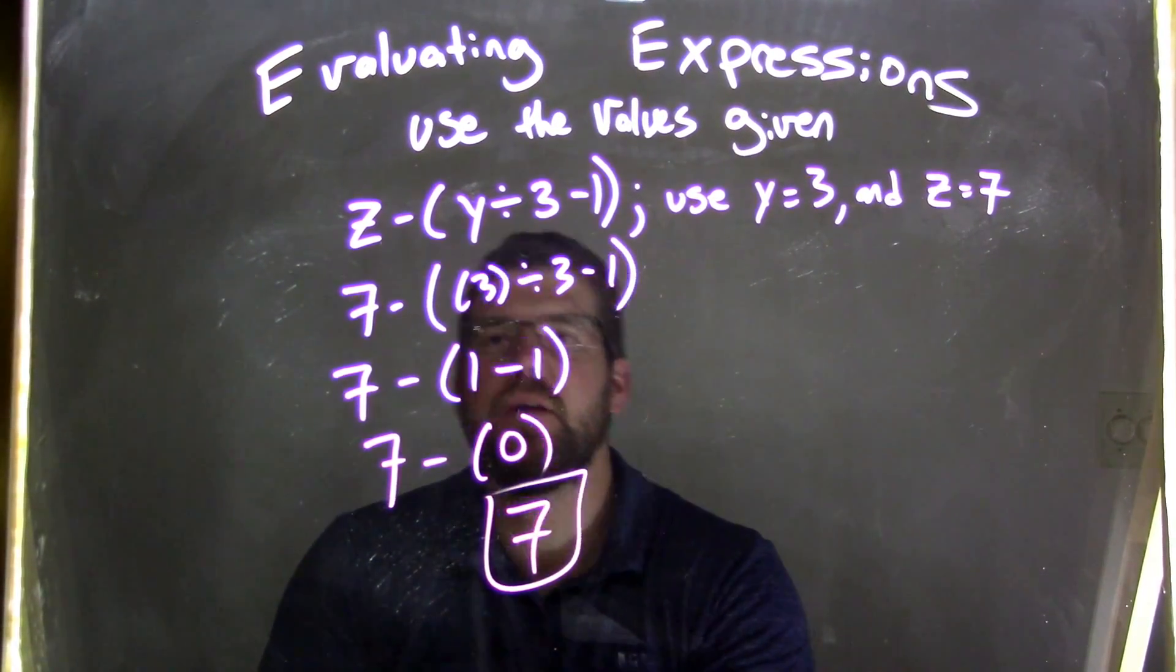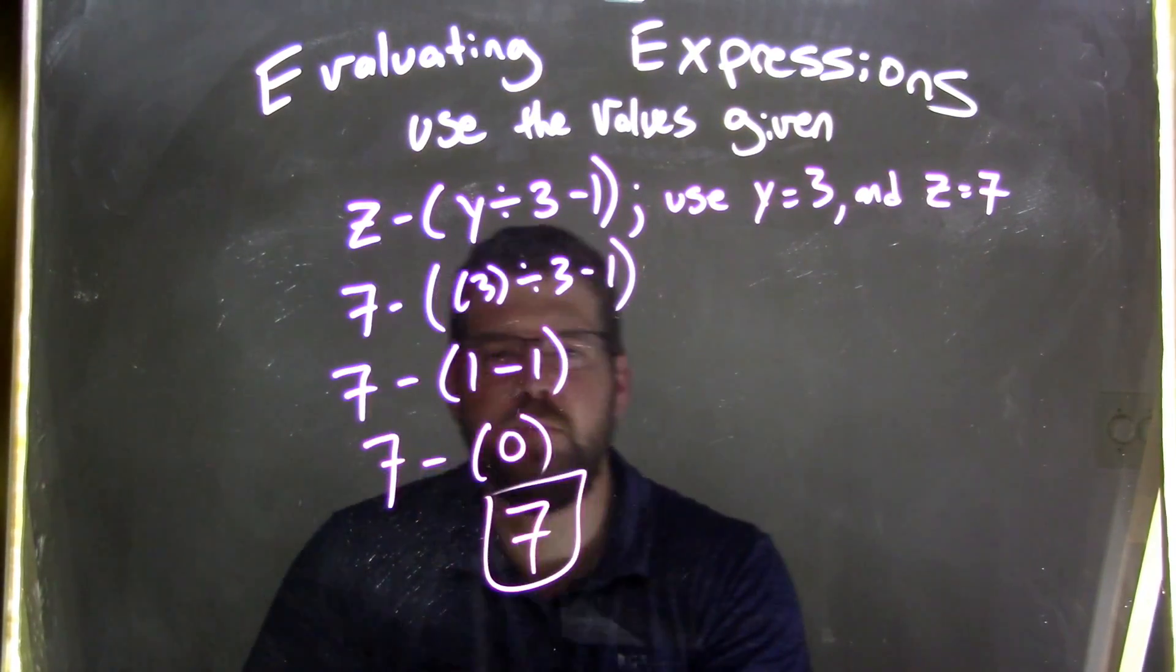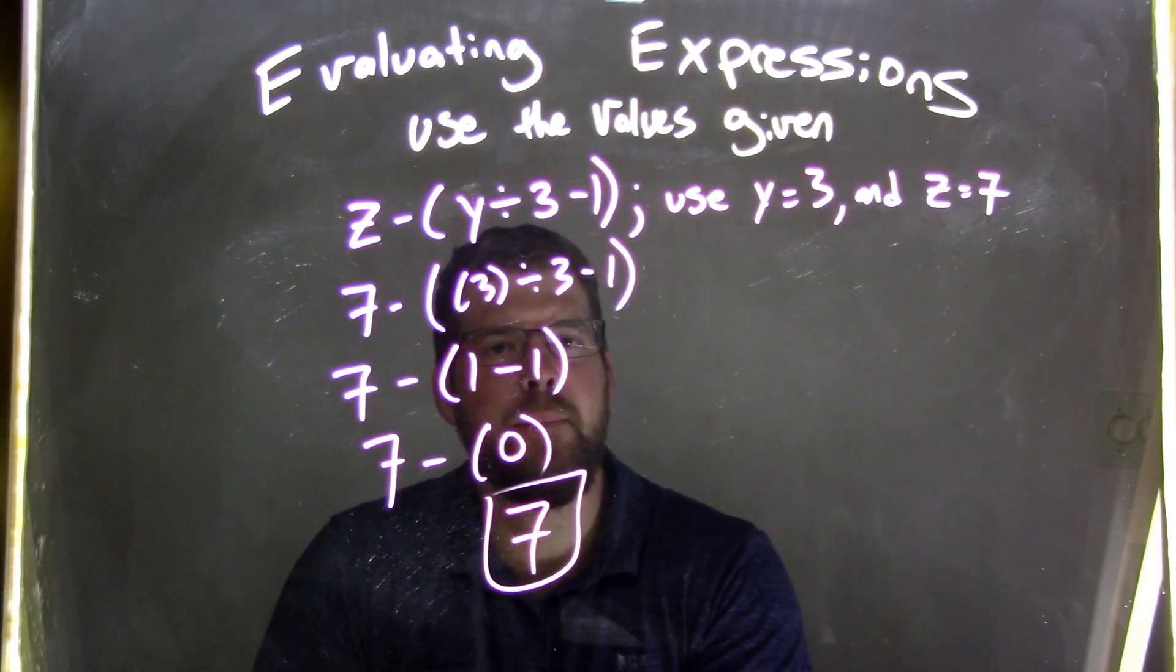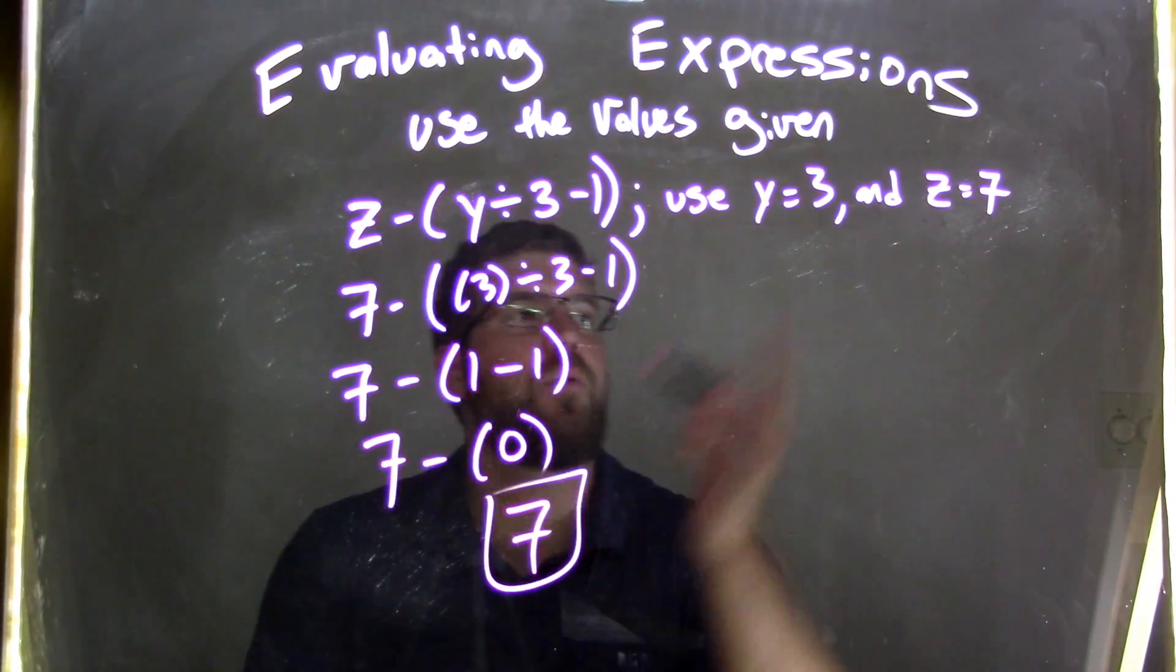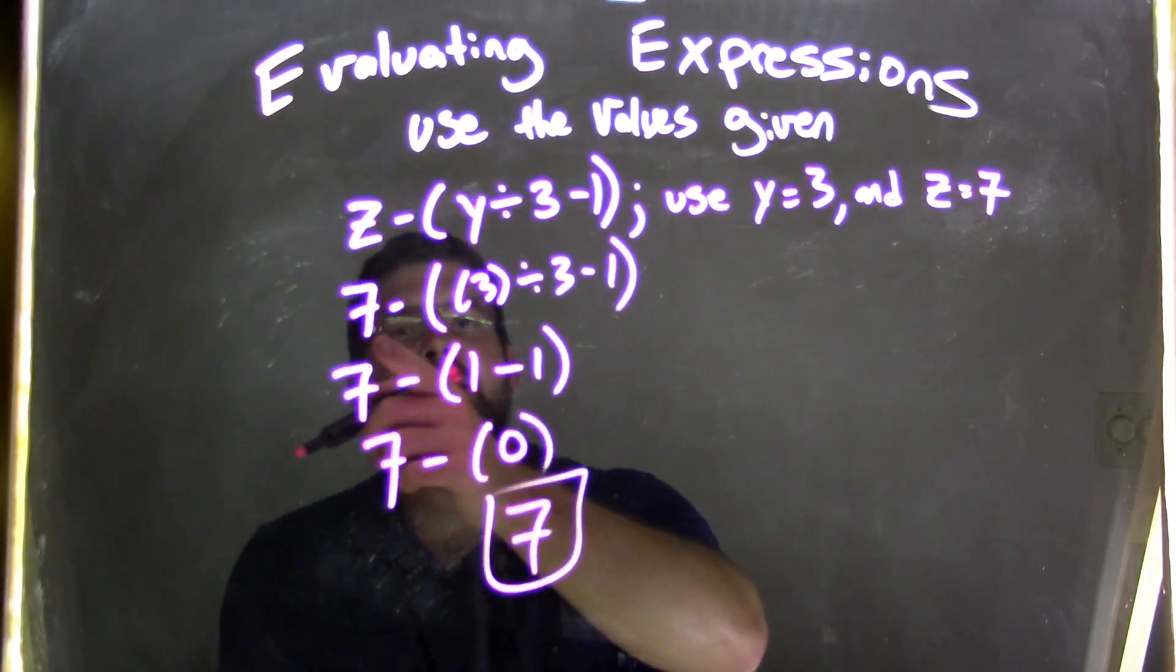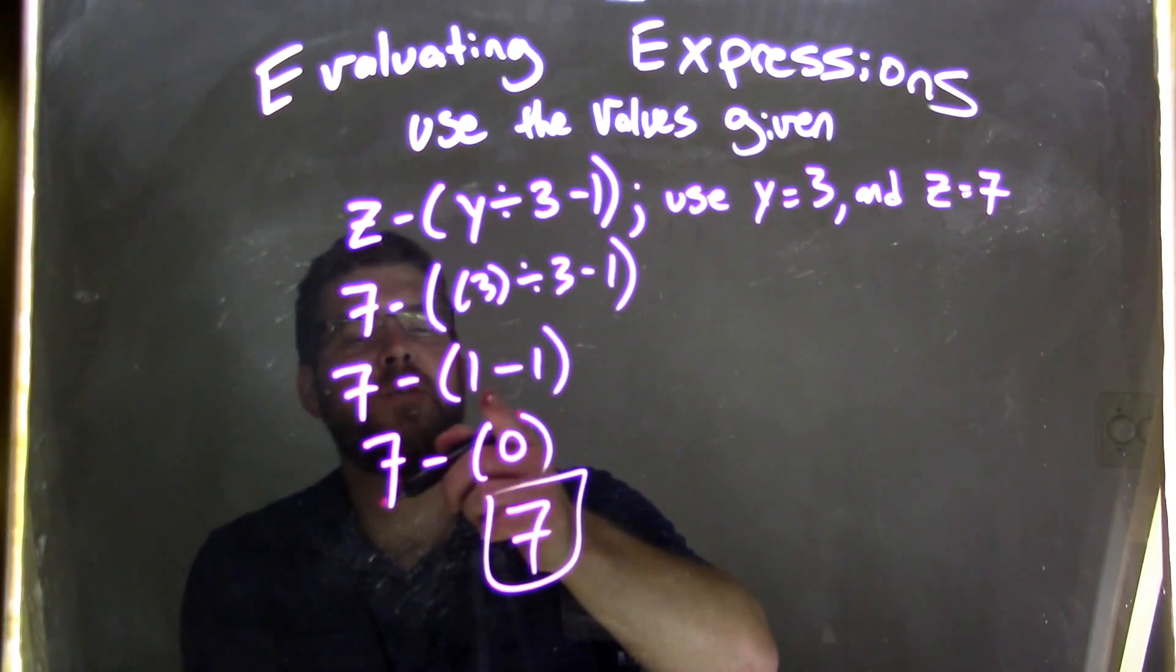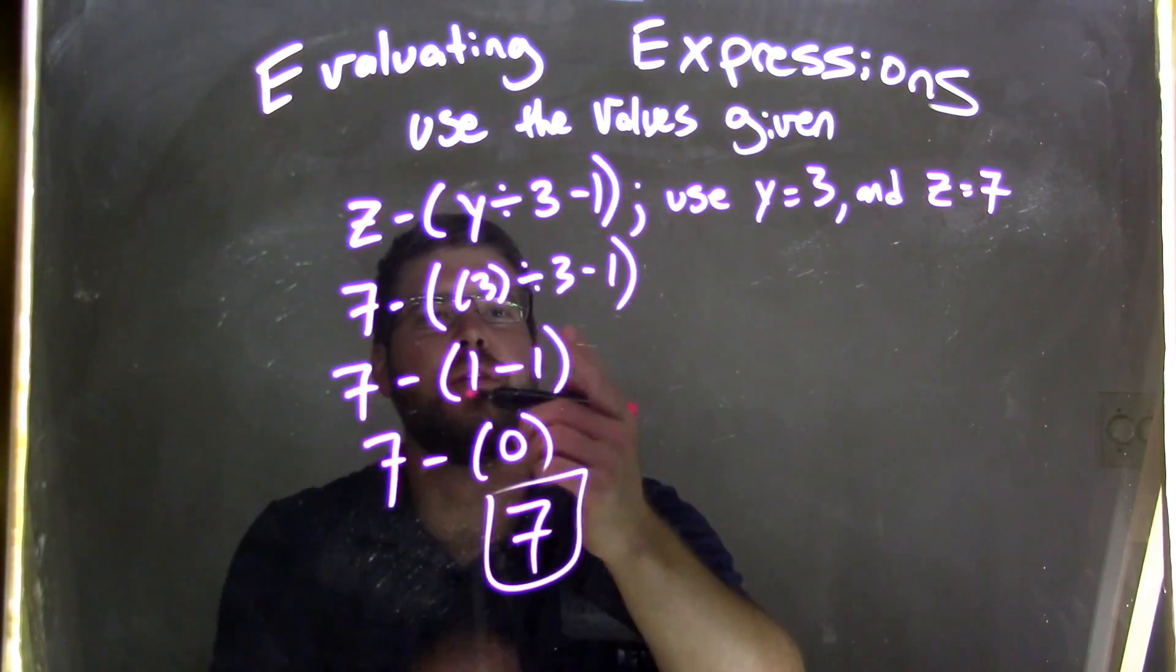So let's recap here. We have our expression: z minus parentheses y divided by 3 minus 1. And we're solving for y equals 3 and z equals 7. And so with y being 3 right here and z is 7, 3 divided by 3 comes up to be 1 because it's inside the parentheses first and it's division.